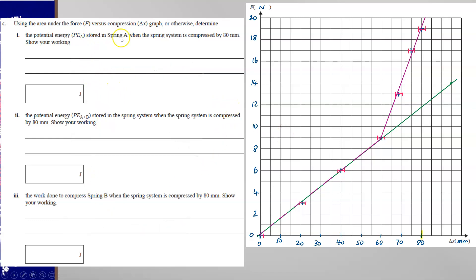So the potential energy stored by spring A when it's compressed by 80 millimetres needs you to think about what spring A would be compressed by. So spring A at 80 millimetres is experiencing, is supporting about 12 newtons of the combined force.